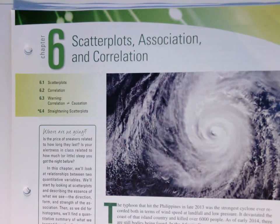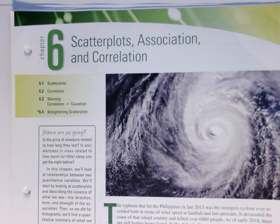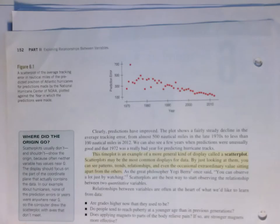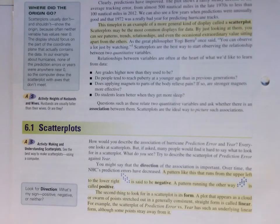So scatterplots, association, and correlation, we're actually going to be reviewing and using all the sections in here, including the optional 6.4 straightening scatterplots, the idea of transformations as a way of cleaning things up. We'll start with a model for the mean error as a function of time for Atlantic hurricanes, and think about this idea of a time plot here, and then more generally the idea of scatterplots. So this is something you've seen before in your high school work or other places.